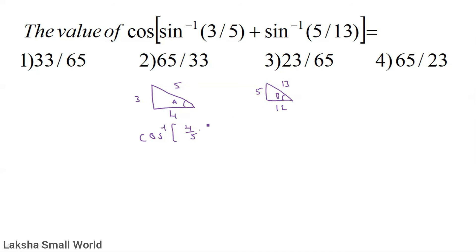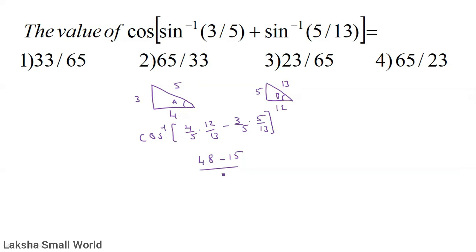Using cos(A+B) = cos A·cos B − sin A·sin B. cos A = 4/5, cos B = 12/13, sin A = 3/5, sin B = 5/13. So (4/5)×(12/13) − (3/5)×(5/13) = 48/65 − 15/65 = 33/65.